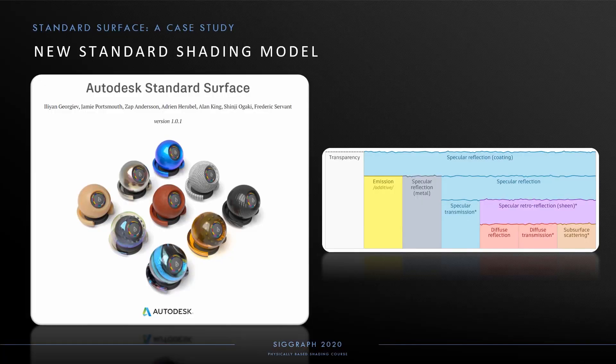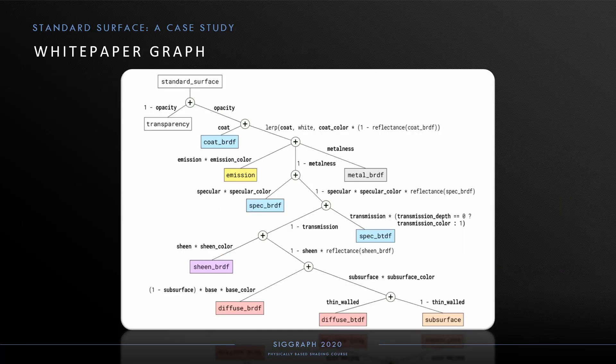The next section is a case study of how these nodes can be used to construct an industry production uber shader. In parallel to the development of the physically based shading nodes, at Autodesk we were developing an open standard uber shading model for offline and real-time rendering. This provided a valuable proving ground for the new MaterialX shading nodes. Standard surface was defined as a graph from its inception, fitting very well to our model.